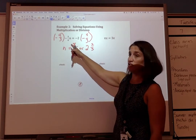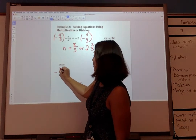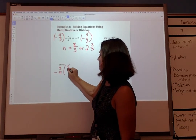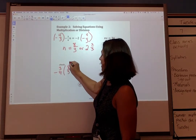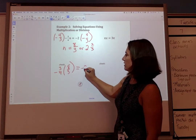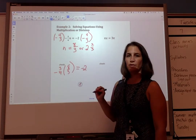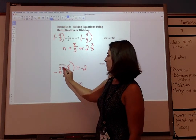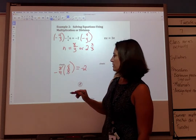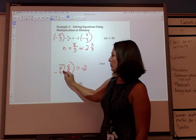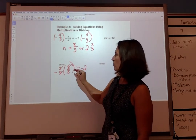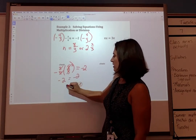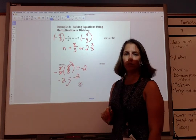Let's check our work. We have negative three-fourths times 8 thirds equals negative 2. We can simplify: 3 goes into itself once, 4 goes into itself once, and into 8 twice. So negative 2 equals negative 2 — we're good.